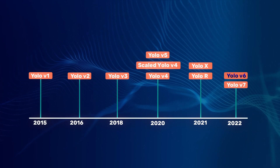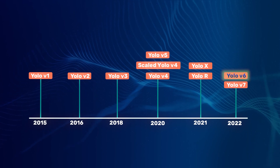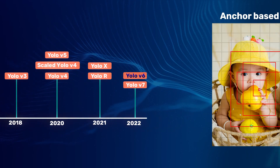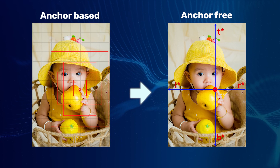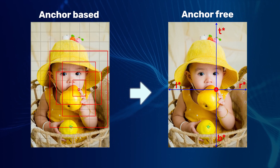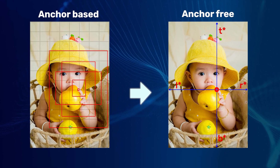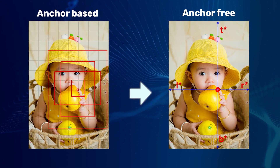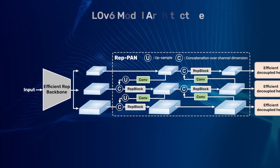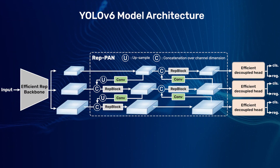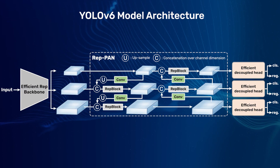But first, how is YOLO v6 different from other YOLO networks? YOLO v6 is an anchor-free object detection model. It improves the inference speed and generalizability on diverse datasets. The YOLO v6 model architecture is also fundamentally altered.